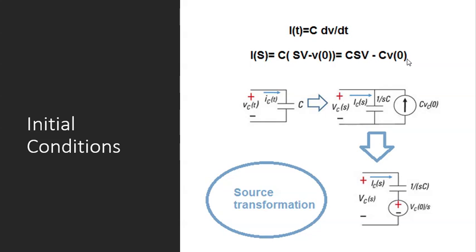So how should we show it at the circuit level? Imagine this is a capacitor with an initial condition. I know that in Laplace domain, this I has to become Cs·V minus C·V₀⁻. So I can model it with a capacitor without initial condition in parallel with a current source with the value of C·V₀⁻. Now look at this I in this branch — this I will be the sum of the two branch currents.